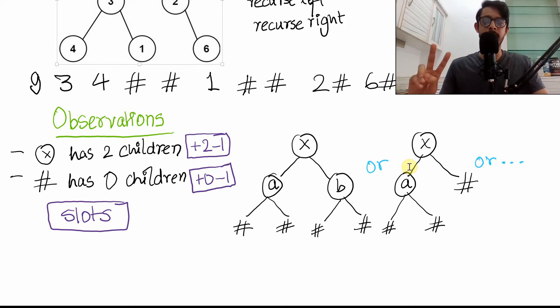We want to note two things here. First is that any valid node, any node which is a character, which is X, will always produce two children. In case like this, it is A and B. In case like this, this is one A and one hash. This is also allowed.